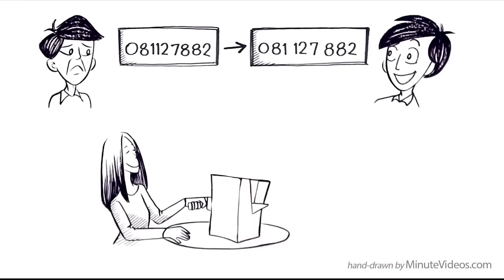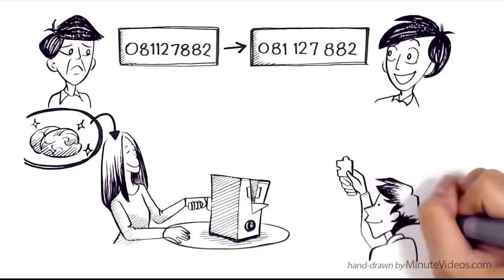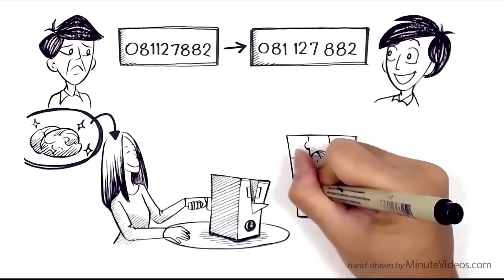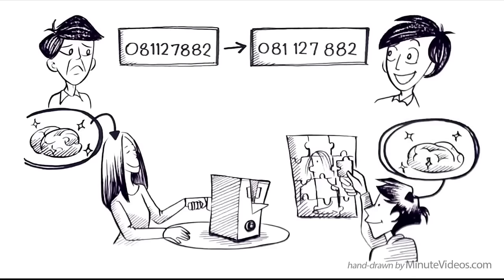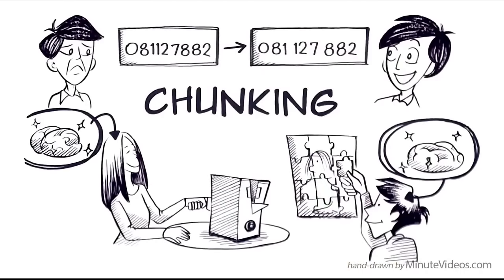Cutting large bits of information into smaller pieces helps us to understand. If we put small pieces back together, we can see the big picture and that helps us to remember. The process is called chunking. This is how it works.